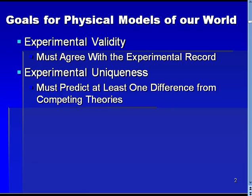Secondly, any good model must be experimentally unique. Often, what is touted to be a new theory is, in the end, simply a renaming of things from an old theory. While it may be interesting, the critical issue is whether a theory predicts something different from its competitors, so that a test can be done to see which one best represents nature.